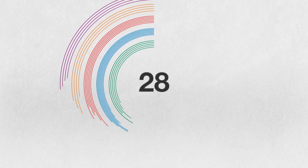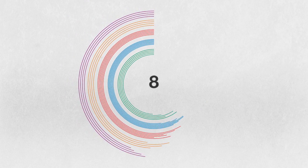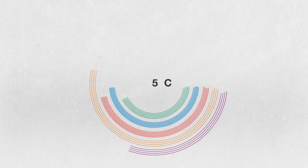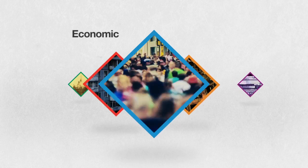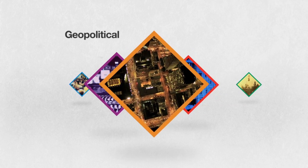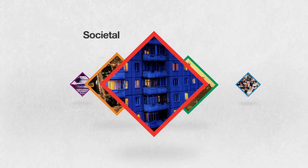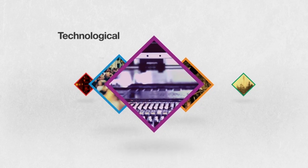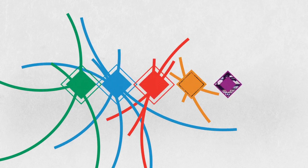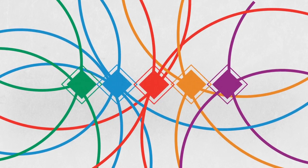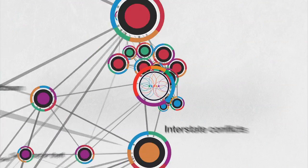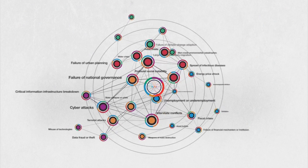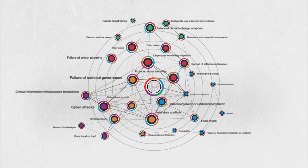28 global risks are assessed, spread across five categories: economic, environmental, geopolitical, societal, and technological. This year's report analyzes the individual potential of each risk, as well as its interconnections.